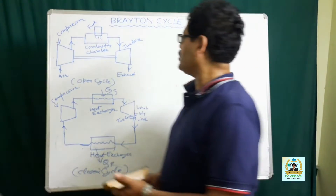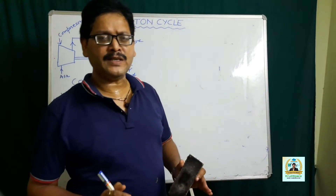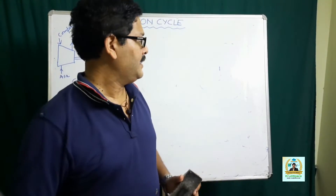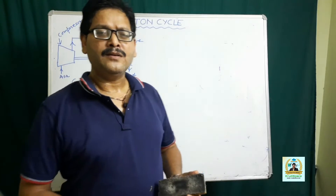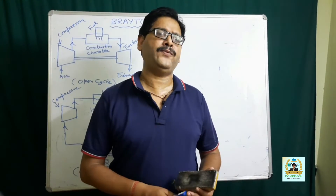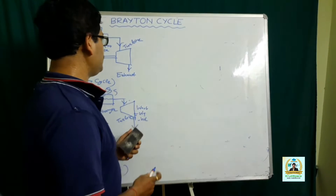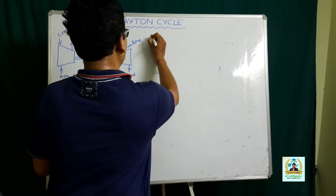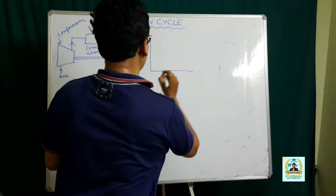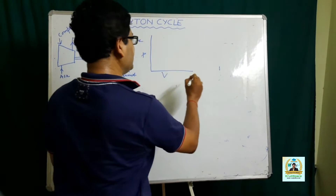In both cases the thermodynamic processes are exactly the same. The Joule or Brayton cycle consists of four thermodynamic processes. Let me show the Brayton cycle in the PV and TS diagram.